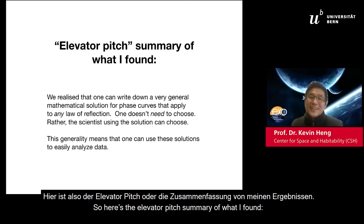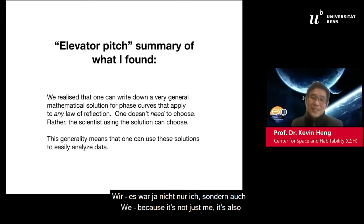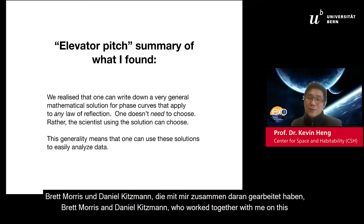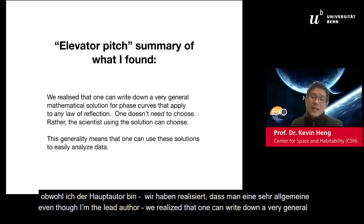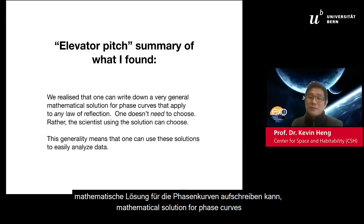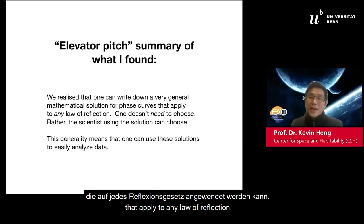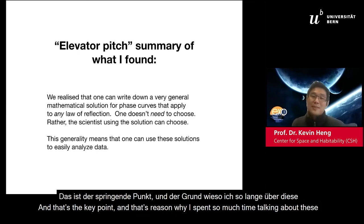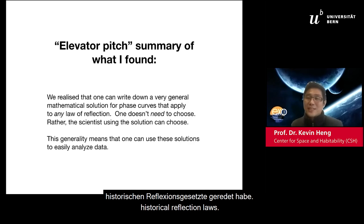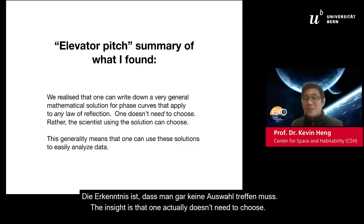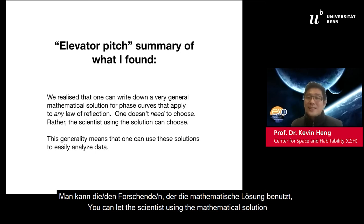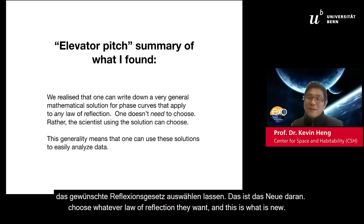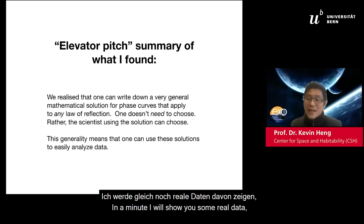Here's the elevator pitch summary of what I found. Together with Brad Morris and Daniel Kitzman, we realized that one can write down a very general mathematical solution for phase curves that applies to any law of reflection. That's the key point — the reason I spent so much time talking about these historical reflection laws. The insight is that one actually doesn't need to choose: you can let scientists using the mathematical solution choose whatever law of reflection they want. This is what is new. In a minute, I'll show you some real data and why this is significant.